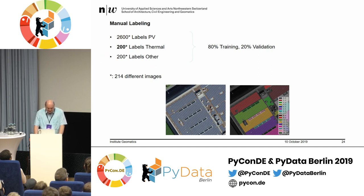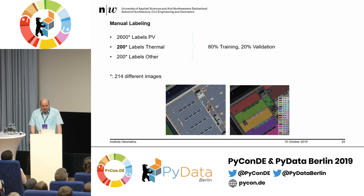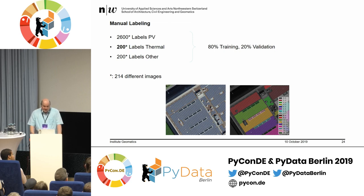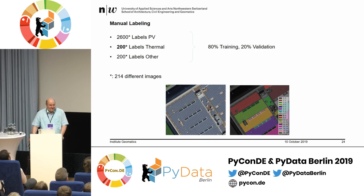What did we have? He did 2,600 labels with photovoltaic images. Unfortunately, only 200 labels of thermal panels, and some things like windows in a class 'other'. These labels are only on 214 different images — of those, we used 80% for training and 20% for validation. The thermal labels are not that many because it's really hard to find them across 2 million buildings.